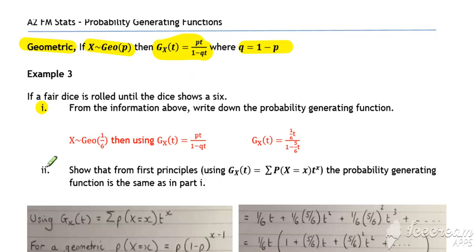Again, similar format. First part, we can just quote that result. So we've got a fair dice rolled until a 6 is shown. We've got a geometric distribution with a p value of 1 sixth.